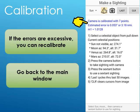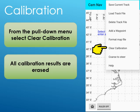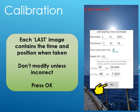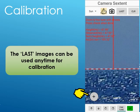If the calibration errors are excessive — that is, greater than 10 nautical miles — you can recalibrate. First, go back to the main window. From the pull-down menu, select clear calibration. Then go back to the sighting screen by pressing the sextant button. Press the last button to cycle through the last 10 images; each stored image contains the time and position when taken. You typically don't need to modify this information unless it is incorrect, then press OK. Position the cursors and press add to calibration. The stored images can be used for calibration at any time, or you can take new images to recalibrate.